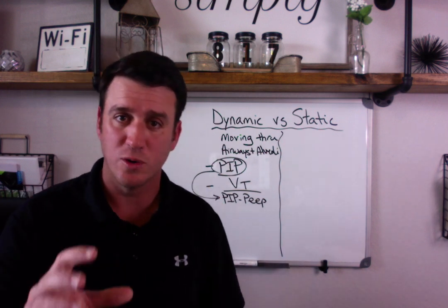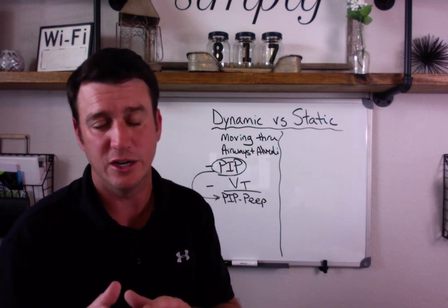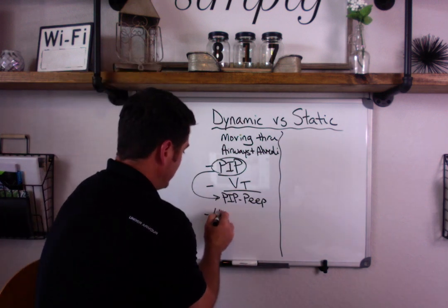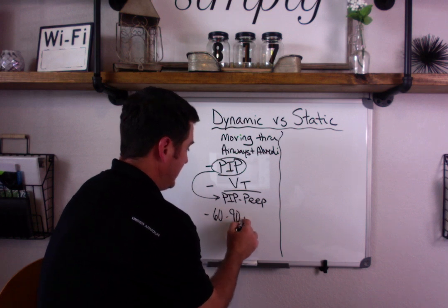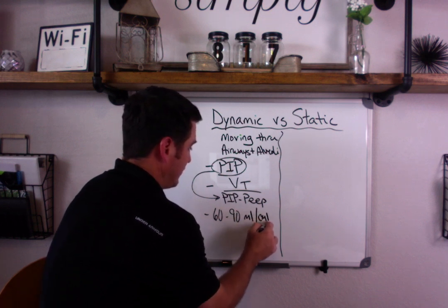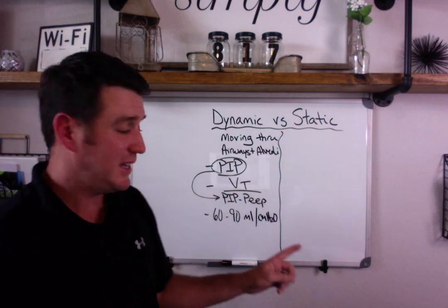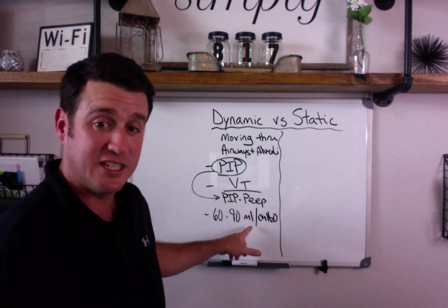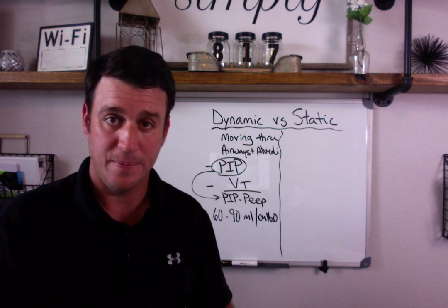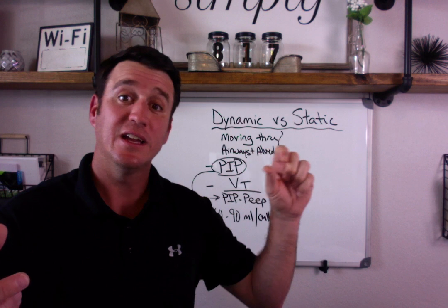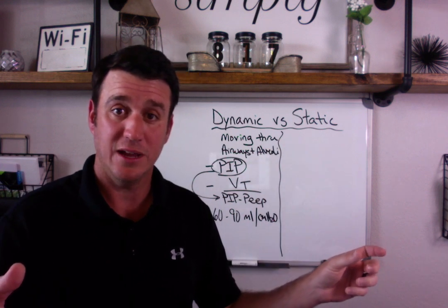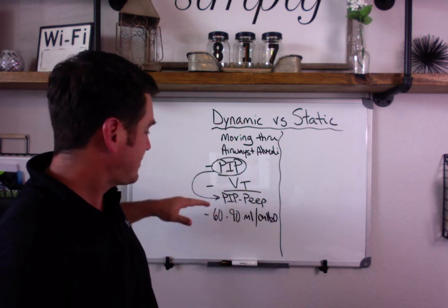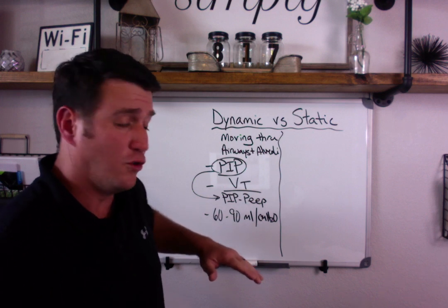Normal dynamic compliance, depending on what resource you look at, is anywhere from 60 to 90 mLs per centimeter of water pressure. Don't freak out if you learn 60 to 100. What that says is for every centimeter of water pressure that's given, there's this much volume given. For every centimeter change in pressure, we're giving X amount of volume. That's what dynamic is — that's the formula and the normal values you need to know.